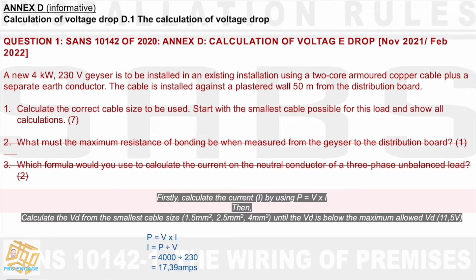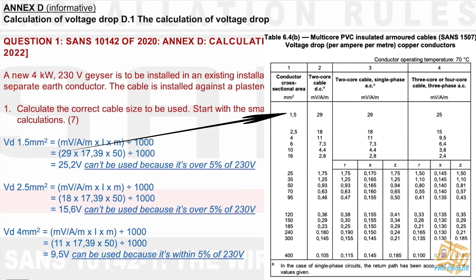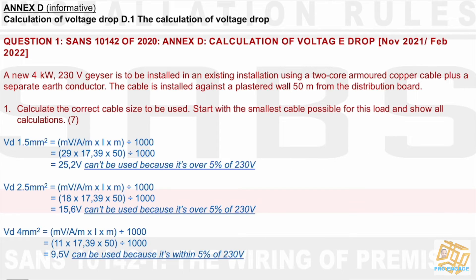Next step: we've got our amps. We will take the amps and choose a formula according to the information we have. For 1.5mm², they use the voltage drop formula — the millivolt per amp per meter value from the table for 1.5mm² is 29. So it's 29 × 17.39 amps × 50 meters ÷ 1000, which gives 25.2 volts.